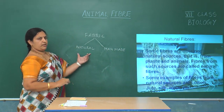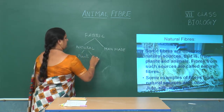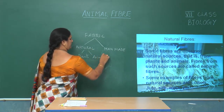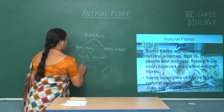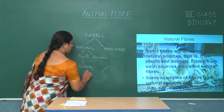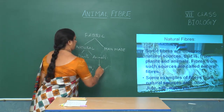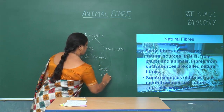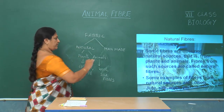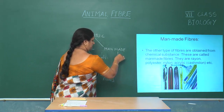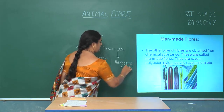The natural fibers are produced from plants and animals. The examples of fibers produced from plants are cotton fibers, jute fibers, etc. The fibers obtained from animals are wool and silk fibers. The fabrics produced from manmade fibers include polyester, nylon, etc.